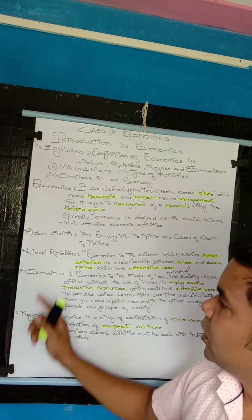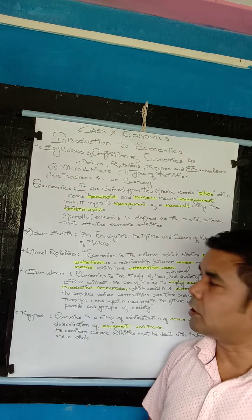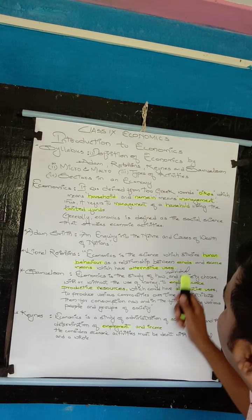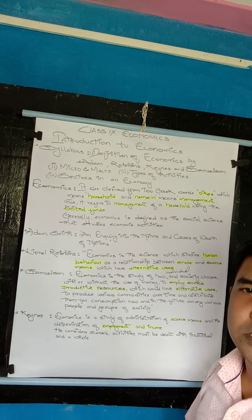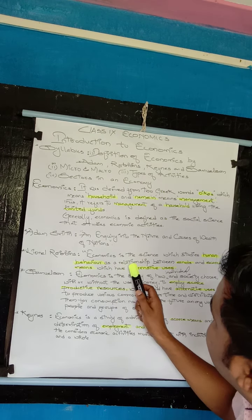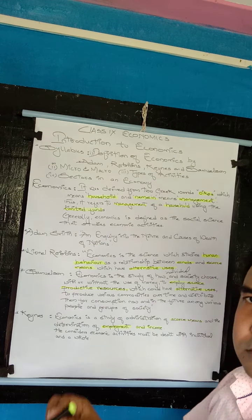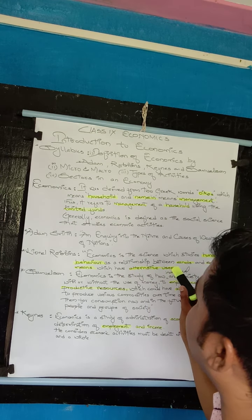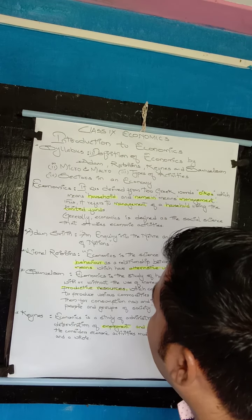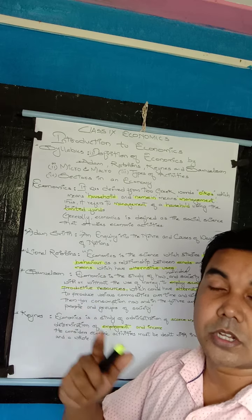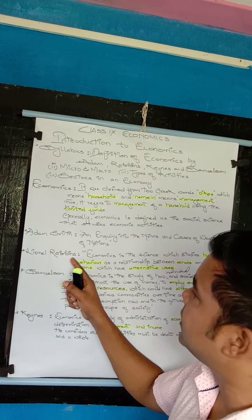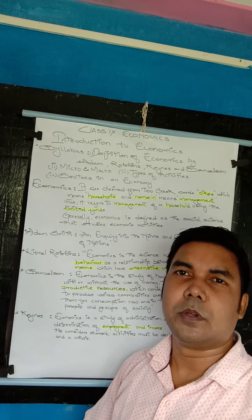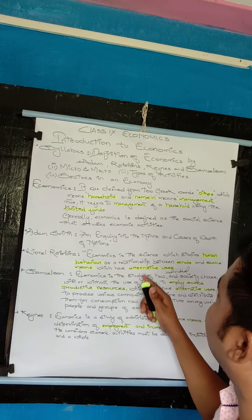Next, Leonel Robbins. According to him, economics is the science which studies human behavior as a relationship between ends and scarce means which have alternative uses. He says economics is a science — the knowledge about human behavior — studying the relationship between ends and scarce means. Scarce means refers to how a person utilizes available resources, whether efficiently or wastefully, and those resources which have alternative uses — meaning they can be used in different ways.